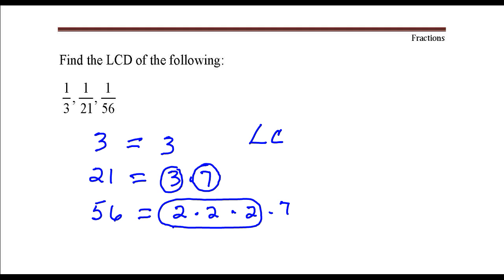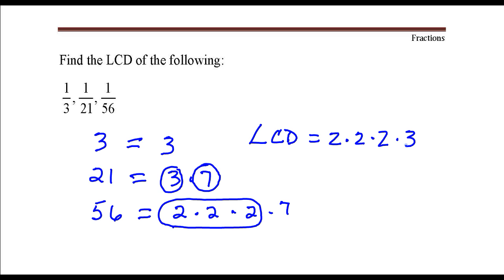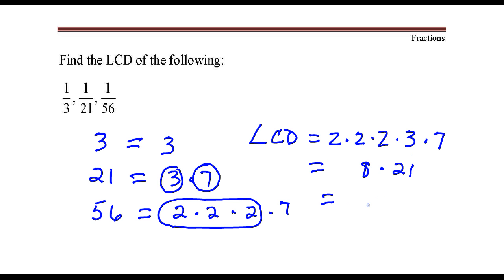The least common denominator would just be the product of those numbers that I have circled. This equals 2 times 2 times 2 times 3 times 7. This is 8 times 21. The least common denominator is 168. And that's it.